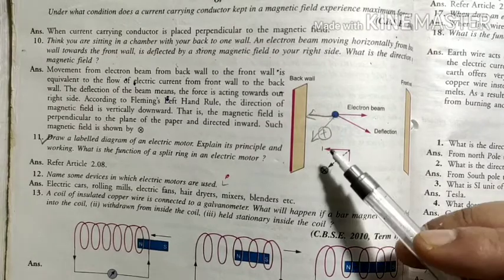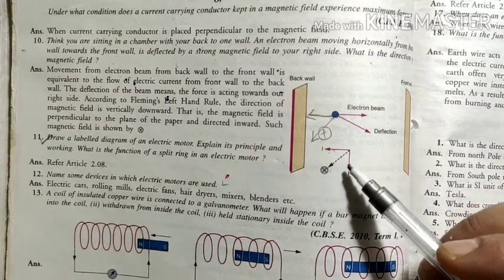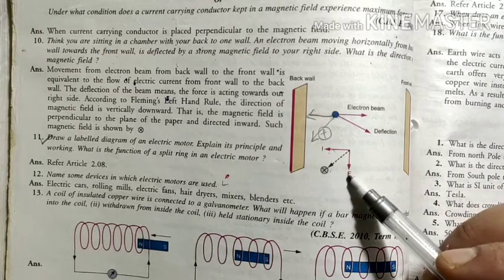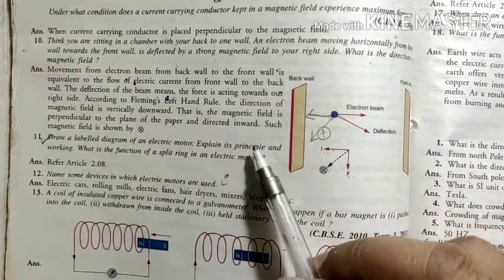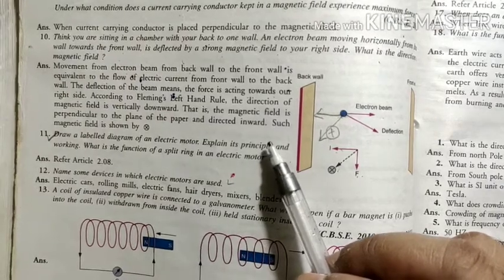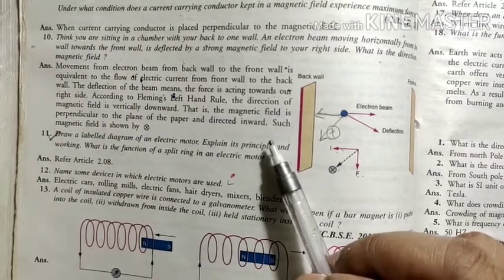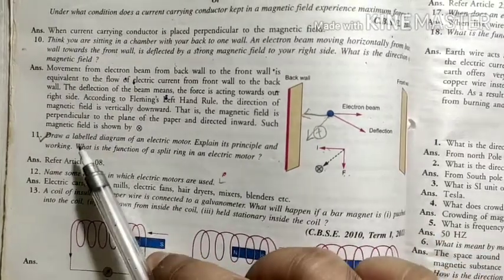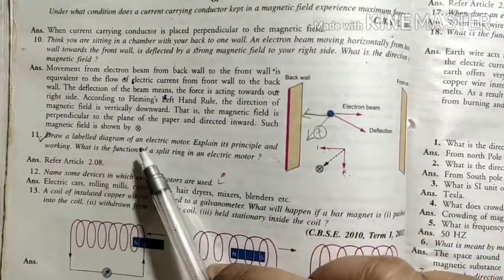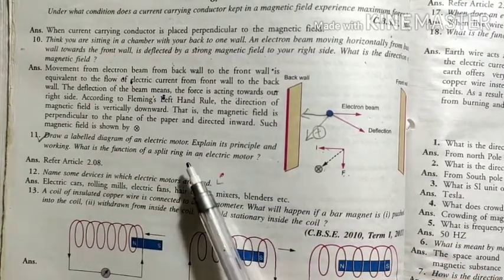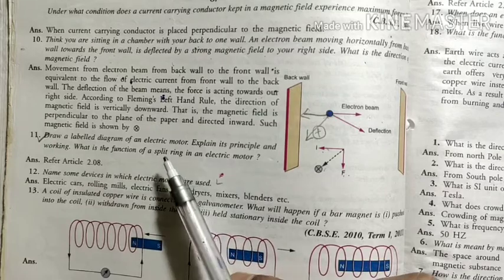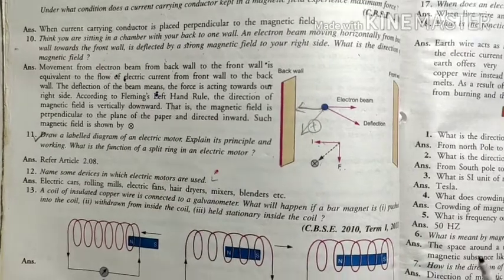Force, magnetic field, and current are all perpendicular to each other. According to Fleming's left-hand rule, we can find the direction of the magnetic field. The next question: draw a labeled diagram of an electric motor and explain its principle, working, and the function of the split ring in an electric motor. This question is already covered in detail — see my video for its detailed description.